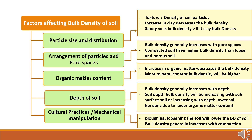An increase in organic matter decreases bulk density, while more mineral content impacts bulk density on the higher side. As the depth of soil is concerned, bulk density generally increases with depth — lower soil horizons have higher bulk density due to lower organic matter content. Cultural practices and physical manipulation like tillage and plowing also impact bulk density; plowing and loosening of soils will lower the bulk density, while bulk density generally increases with compaction.